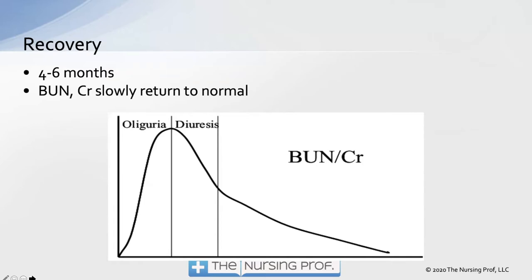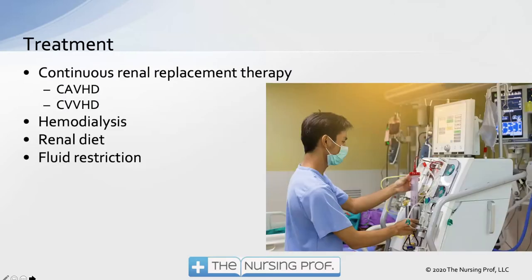The recovery phase lasts four to six months, with BUN and creatinine slowly returning to normal. In the oliguric phase there's a sharp incline in BUN and creatinine; in the diuretic phase some is dumped off; during recovery there's a slow decrease back to baseline. However, even when BUN and creatinine normalize, renal function may not be fully normal — we'd want creatinine clearance and GFR to assess true renal function.